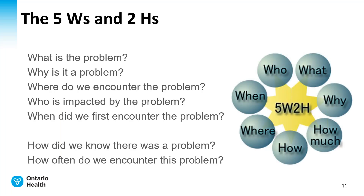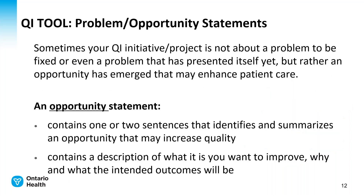Five W's and two H's is a framework for writing a problem statement — not to be confused with the five whys, which is a method of delving into root cause that we will discuss in a future video. By answering what, why, where, who, when, how do we know, and how much, it ensures that we have fully described the problem. Answering each one of these as a QI team will be a rich discussion and will also ensure that we are all seeing the problem in the same way, or at least agree on the problem from different perspectives. Having the appropriate people involved in this discussion is an important first step towards engaging others in both the creation and implementation of the QIP. More often than not, a QI project will be rooted in a problem you are trying to solve — the indicators in the QIP are tied to problems that have been identified in the healthcare system.